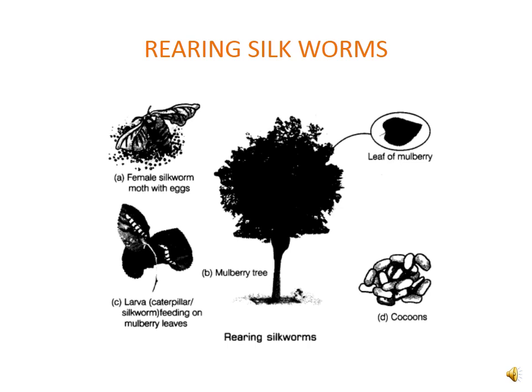The larvae are kept in clean bamboo trays along with freshly chopped mulberry leaves. After 25 to 30 days, the caterpillar stops eating and moves to a tiny chamber of bamboo in a tray to spin a cocoon. Small sticks or twigs may be provided in the tray to which cocoons get attached. The caterpillar or silkworm spins the cocoon inside which the silkworm develops.